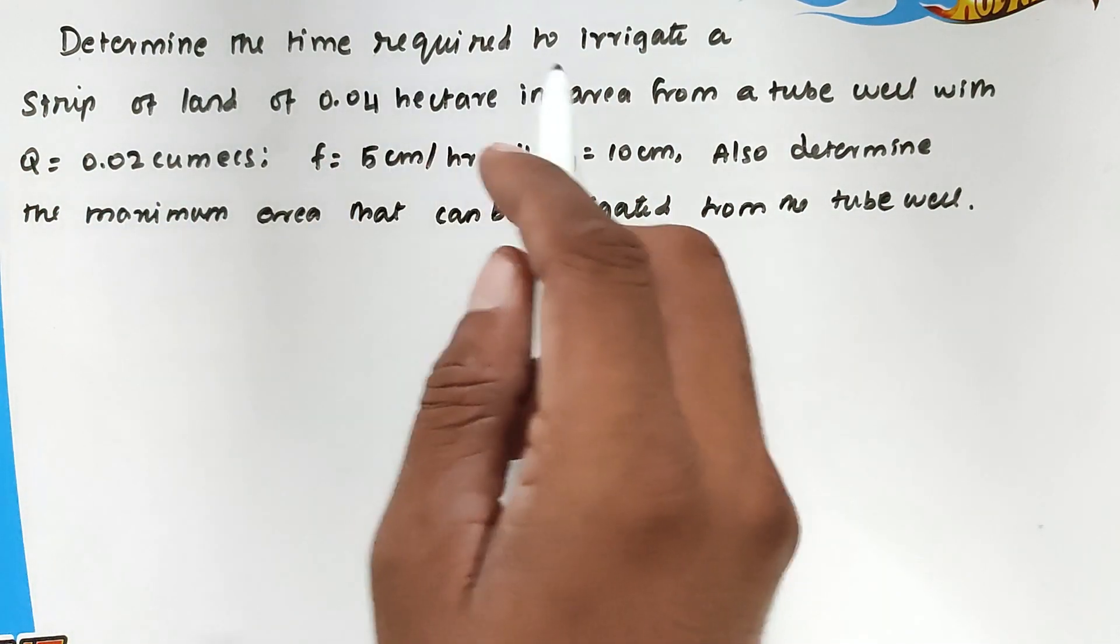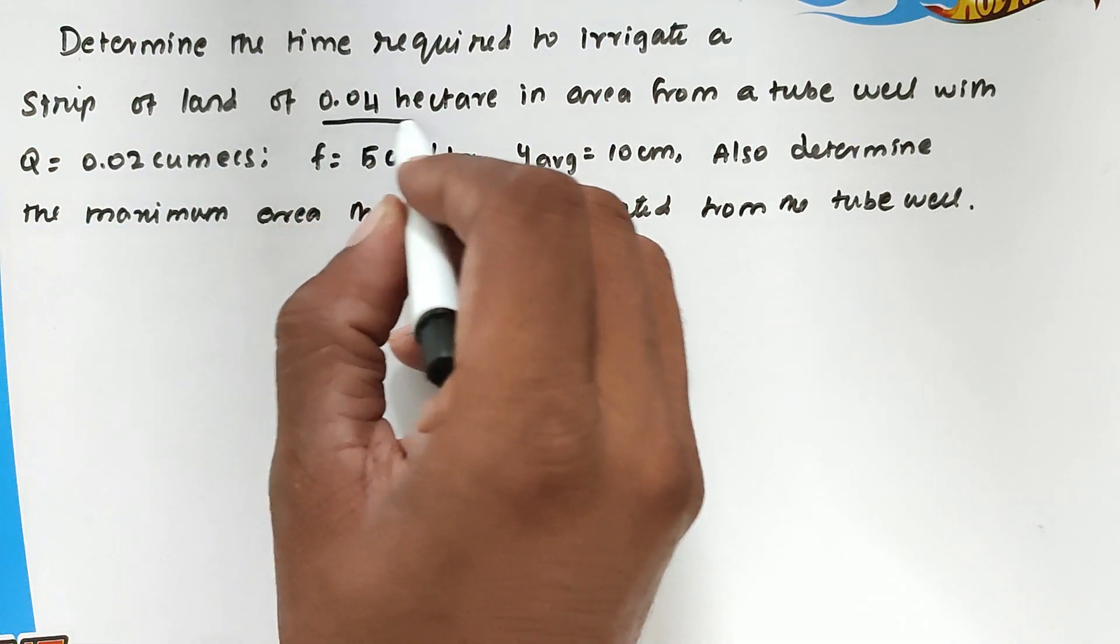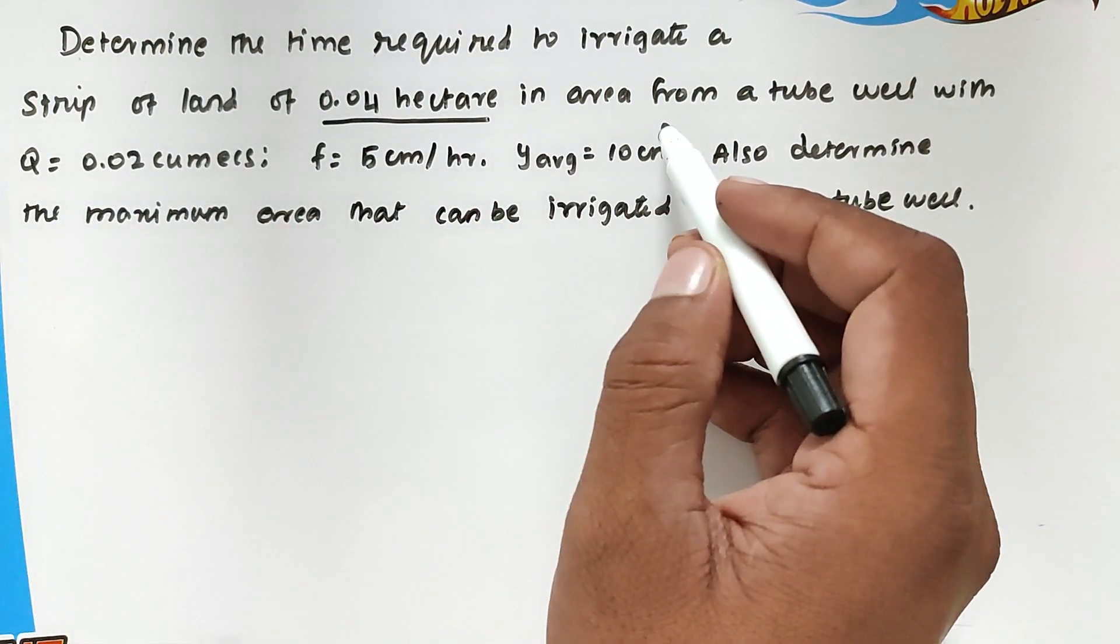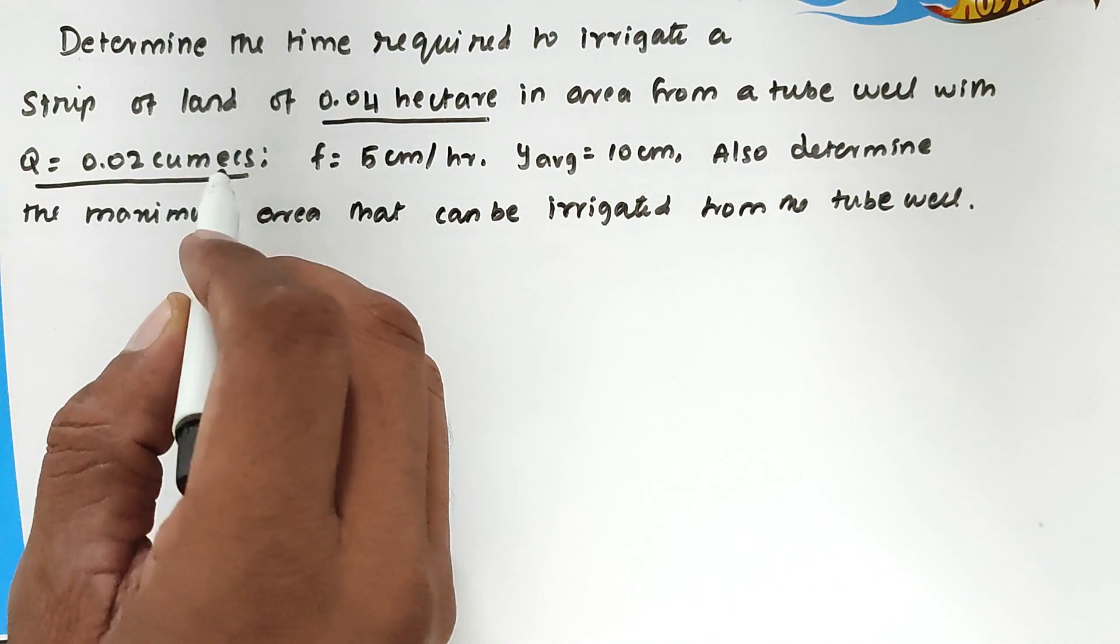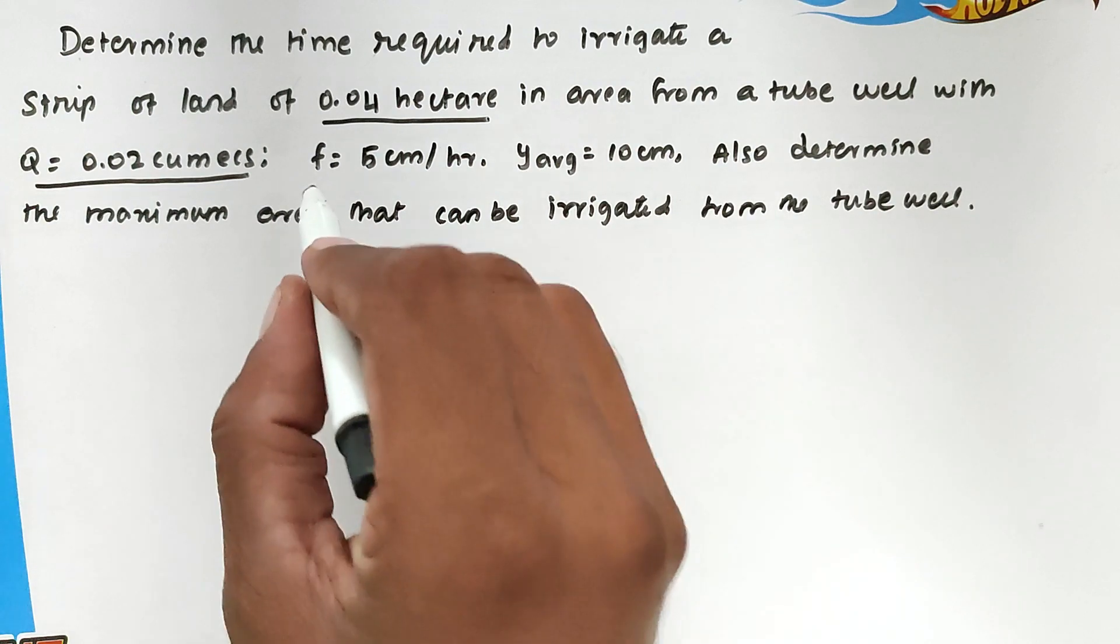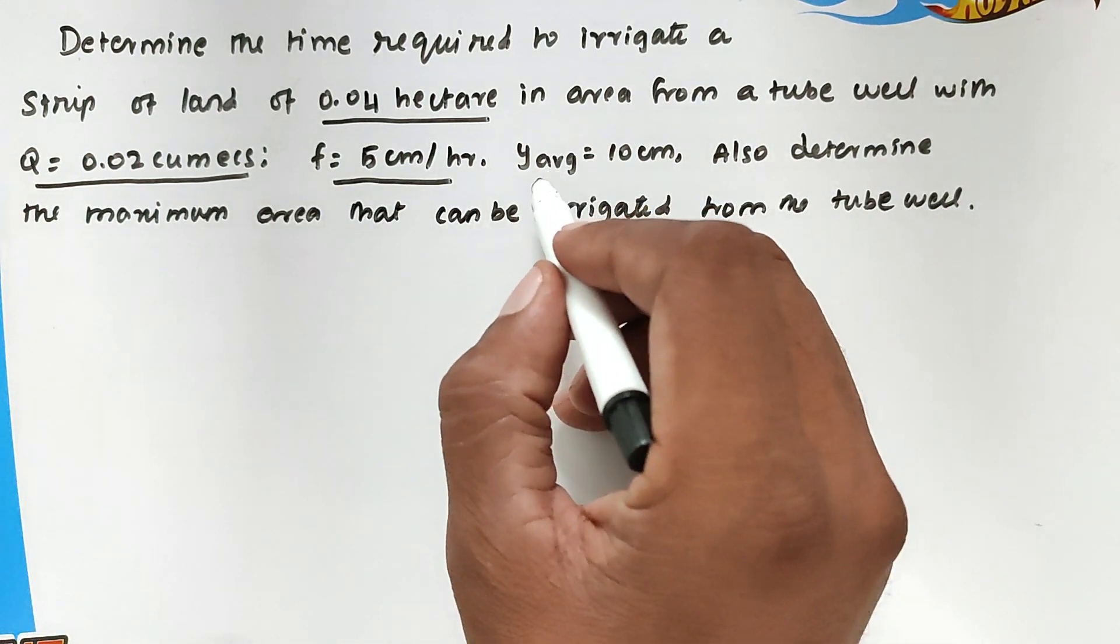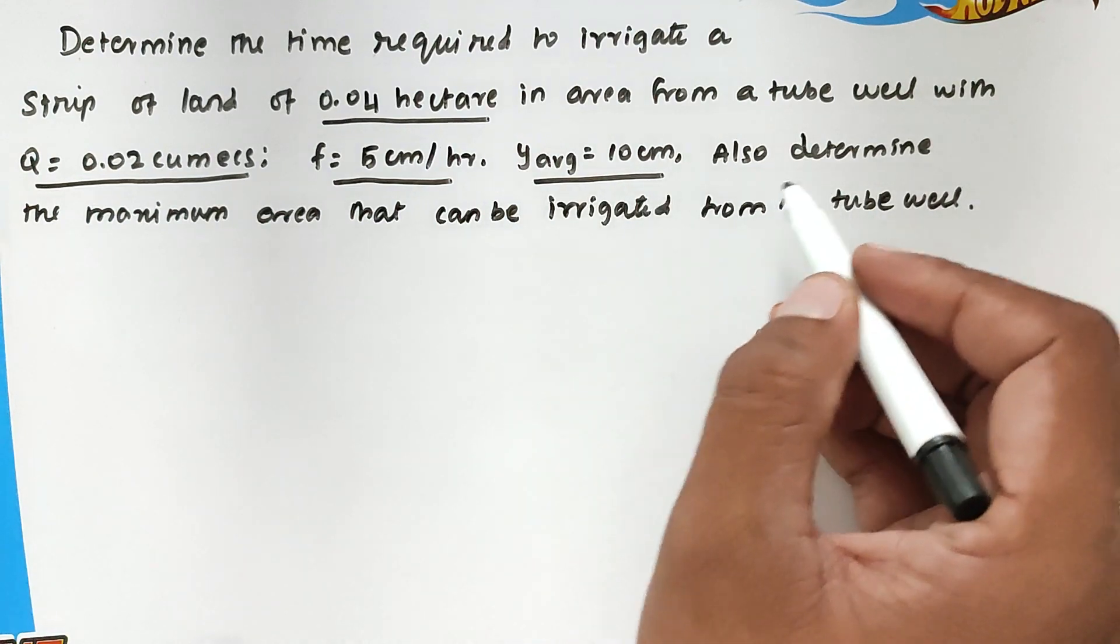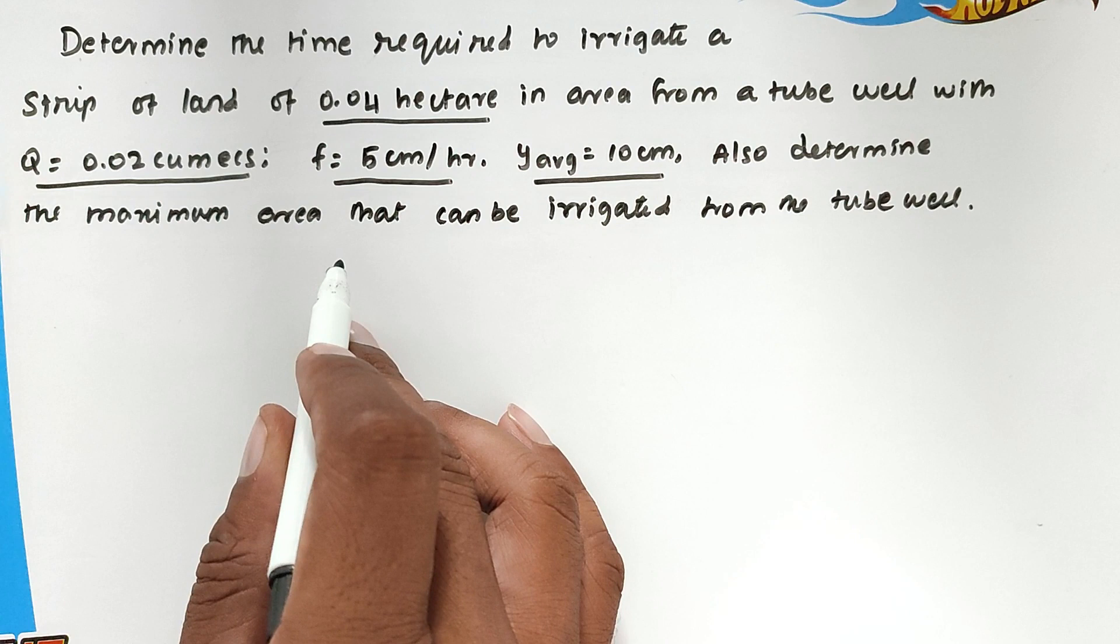Determine the time required to irrigate a strip of land of 0.04 hectare in area from a tube well with Q = 0.02 cubic meters, F = 5 centimeter per hour, Y average is 10 centimeter. Also determine the maximum area that can be irrigated from the tube well.